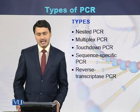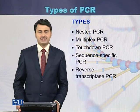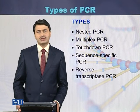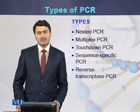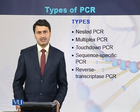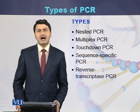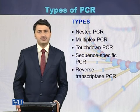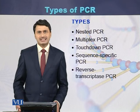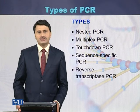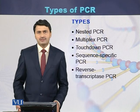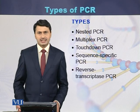The next type is called sequence-specific PCR, which is used to sequence a particular region. Another type is reverse transcriptase PCR, in which RNA is first converted into DNA — called cDNA — and then that cDNA is amplified. This is performed with the help of the reverse transcriptase enzyme.